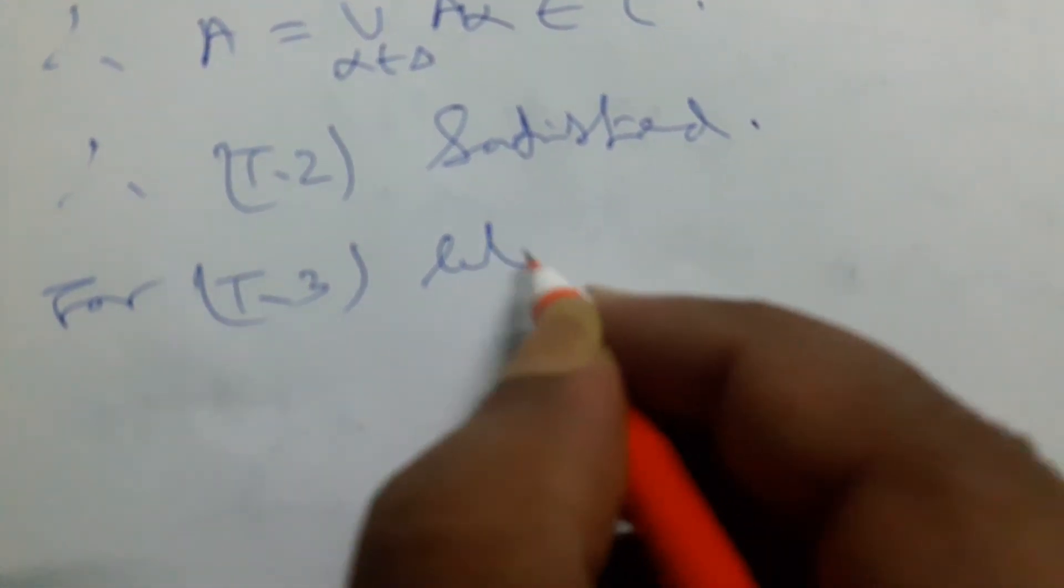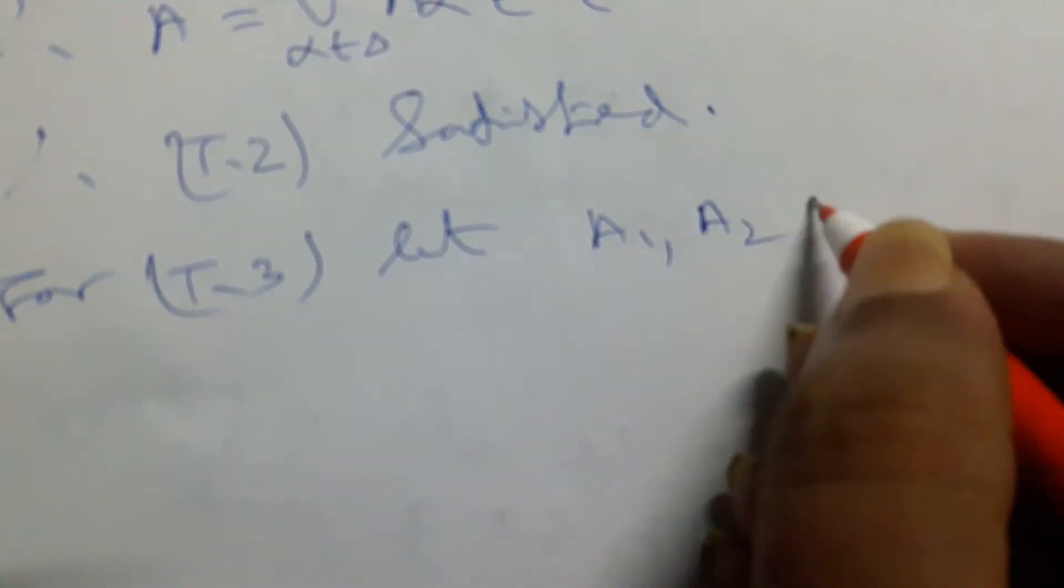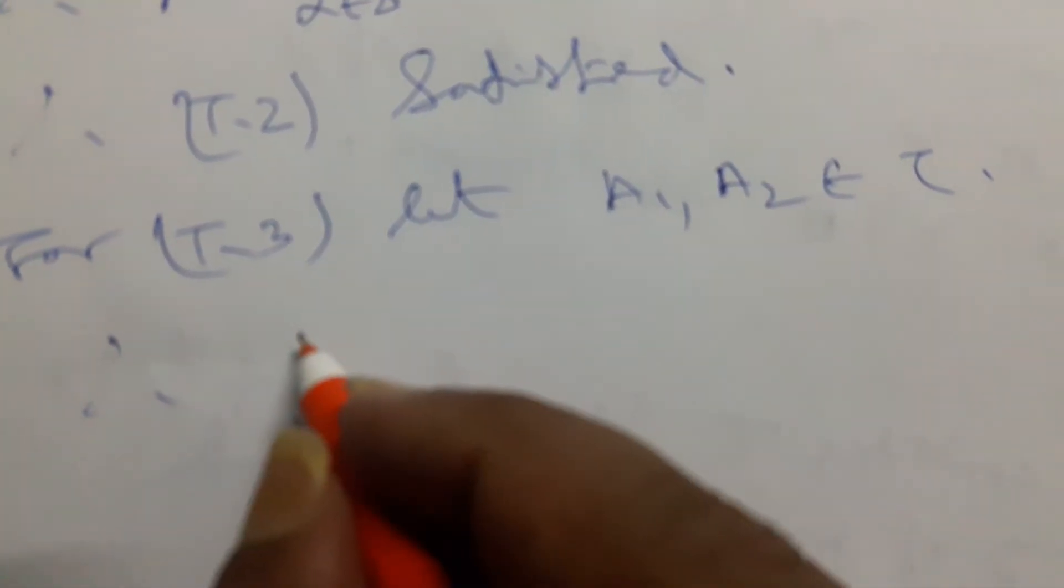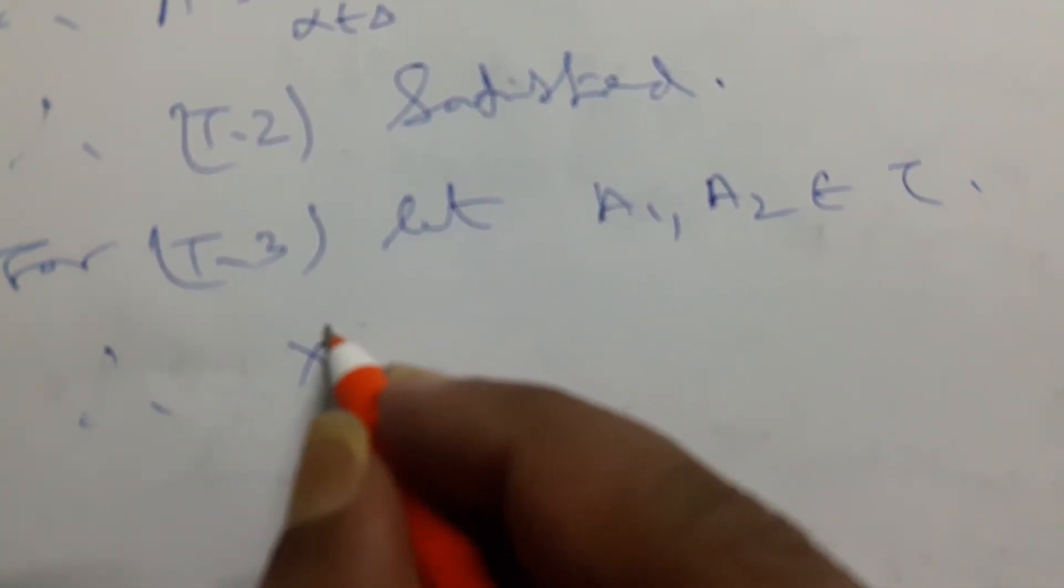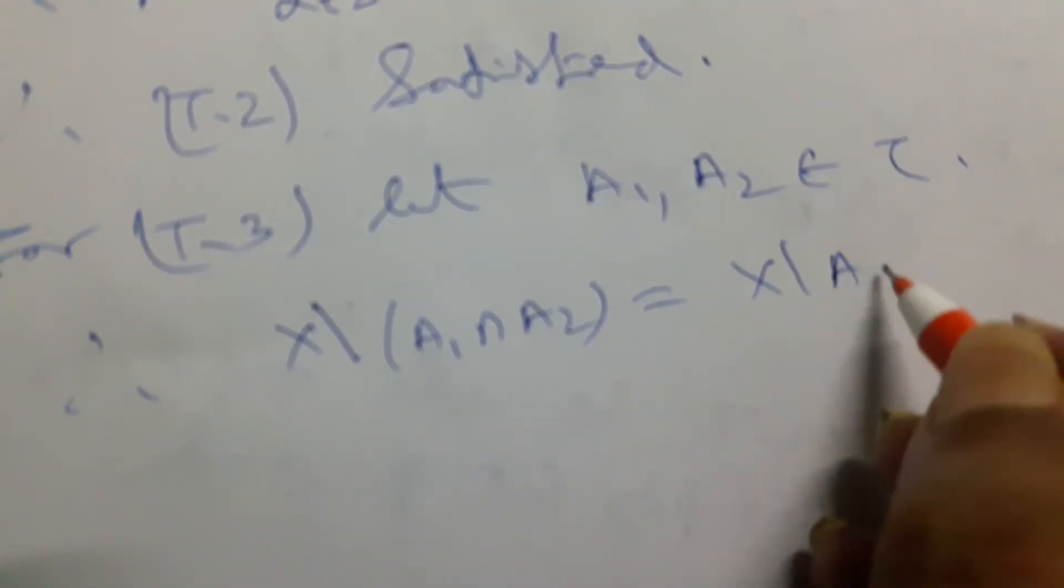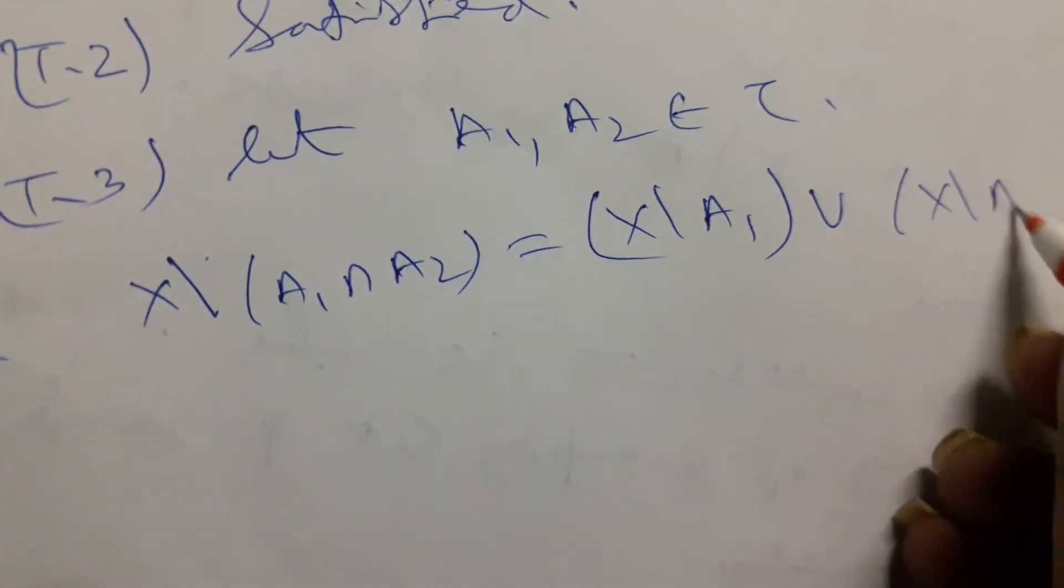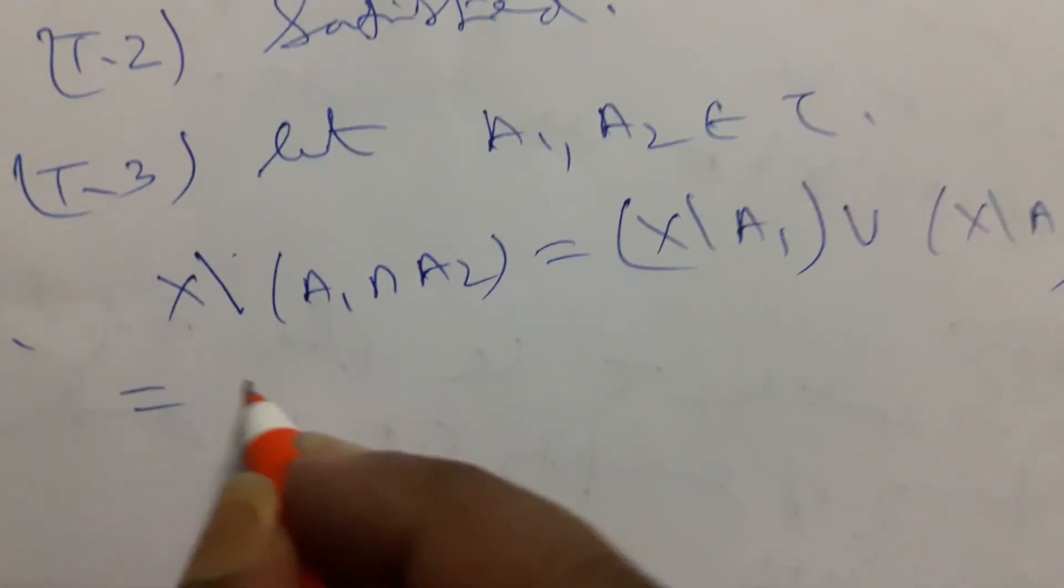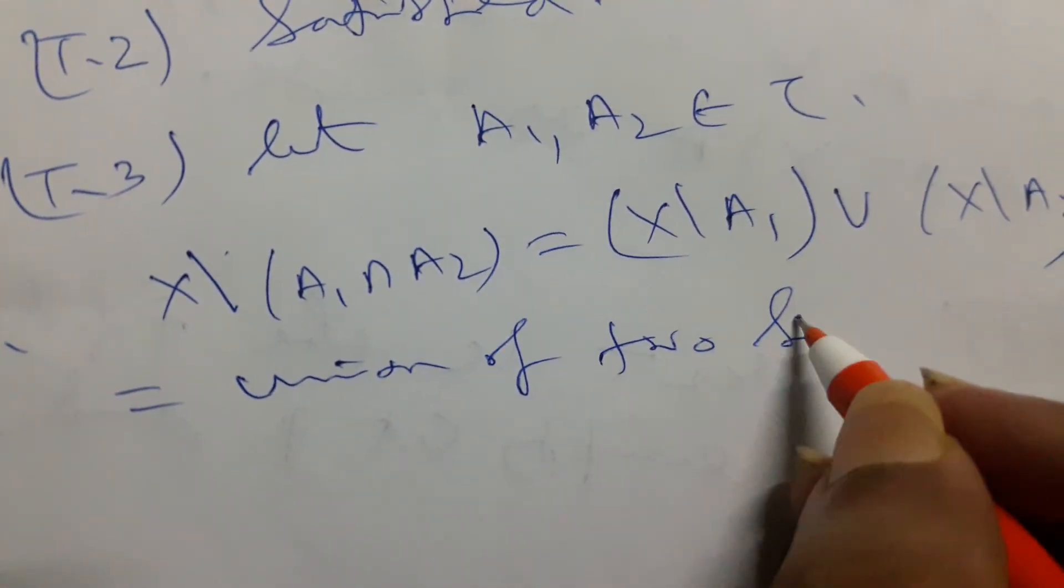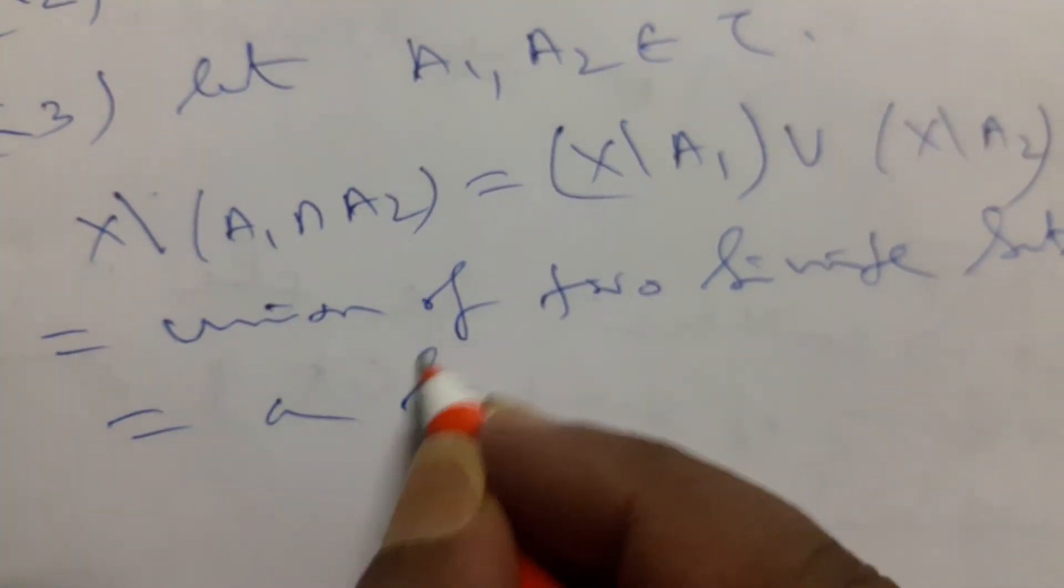For T3, let A1 and A2 belong to τ. Therefore X minus A1 intersection A2, by De Morgan's law, equals X minus A1 union X minus A2, which is the union of two finite sets, equal to a finite set.